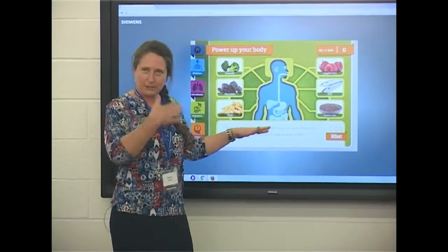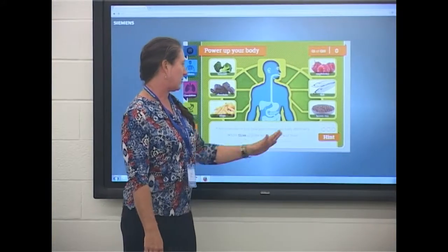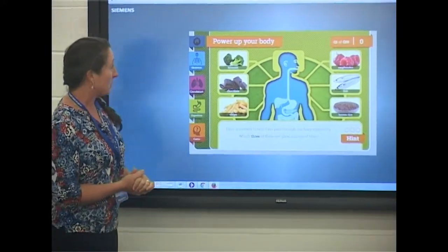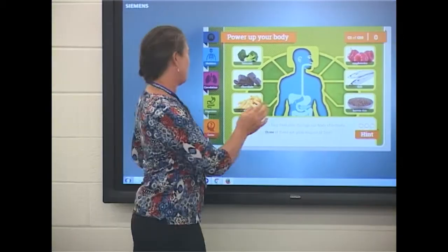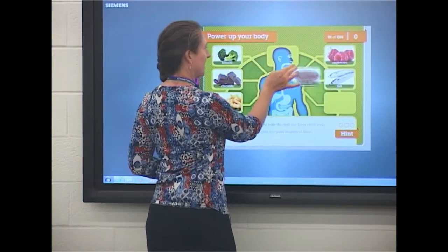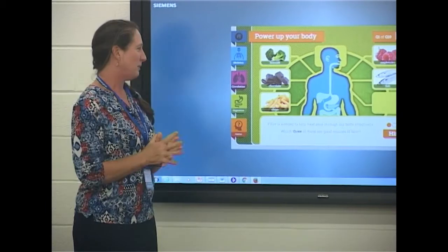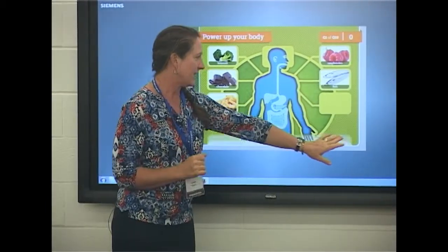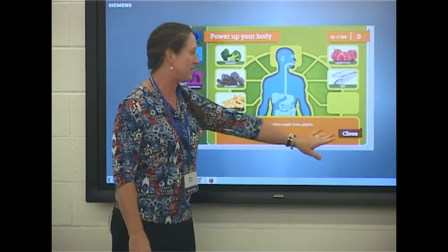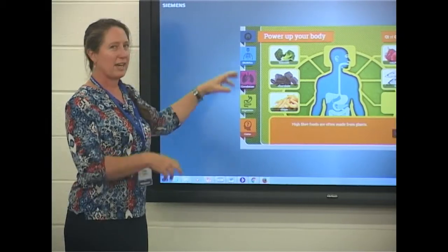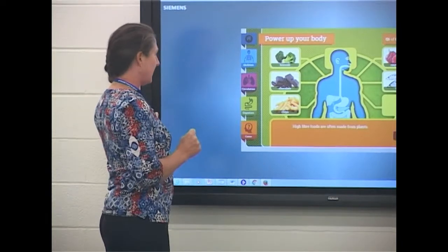So this one shows: fibre helps our food go through our body — which three of these foods are a good source of fibre? We have chocolate, broccoli, brown rice. You put it in his head and he eats it, and he's happy because he goes green when you get it right. You can get hints, high fibre food, plant foods and so on. So you can interact and have different kids coming up to answer; you could have them in teams and so on.